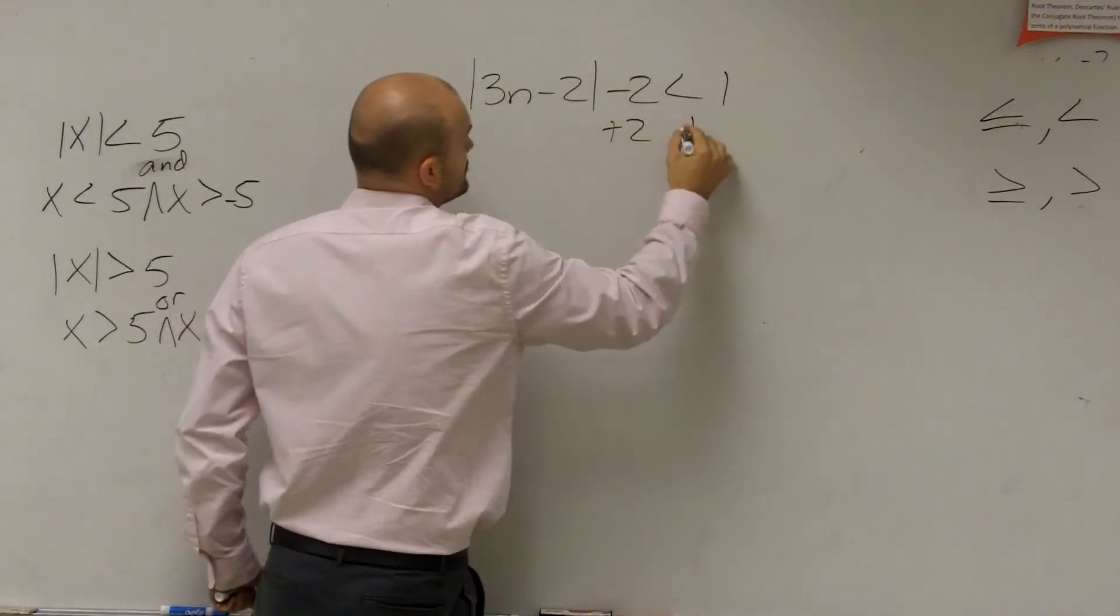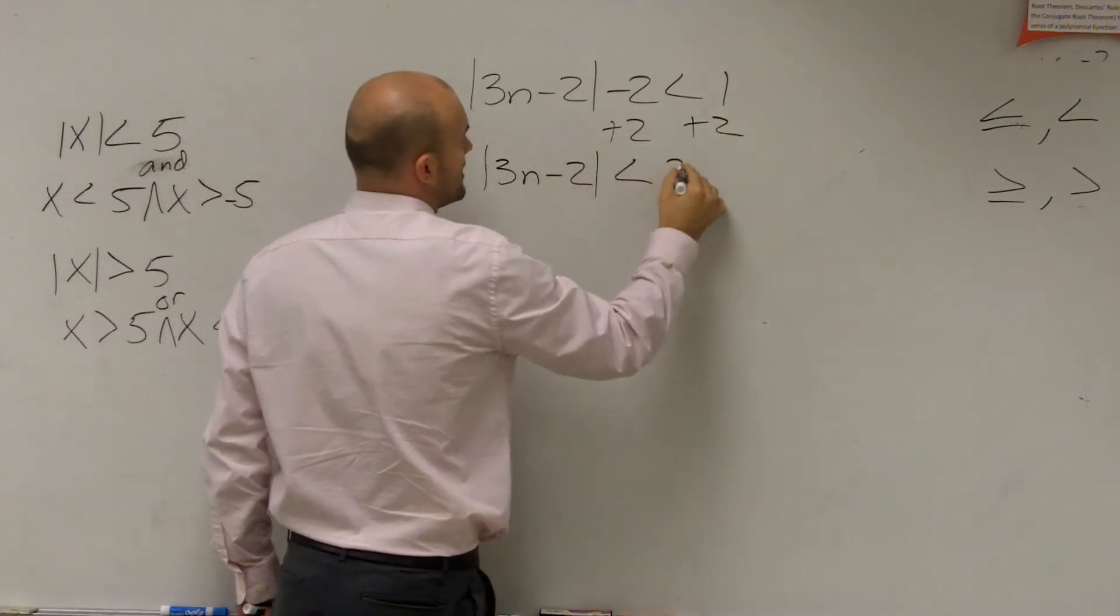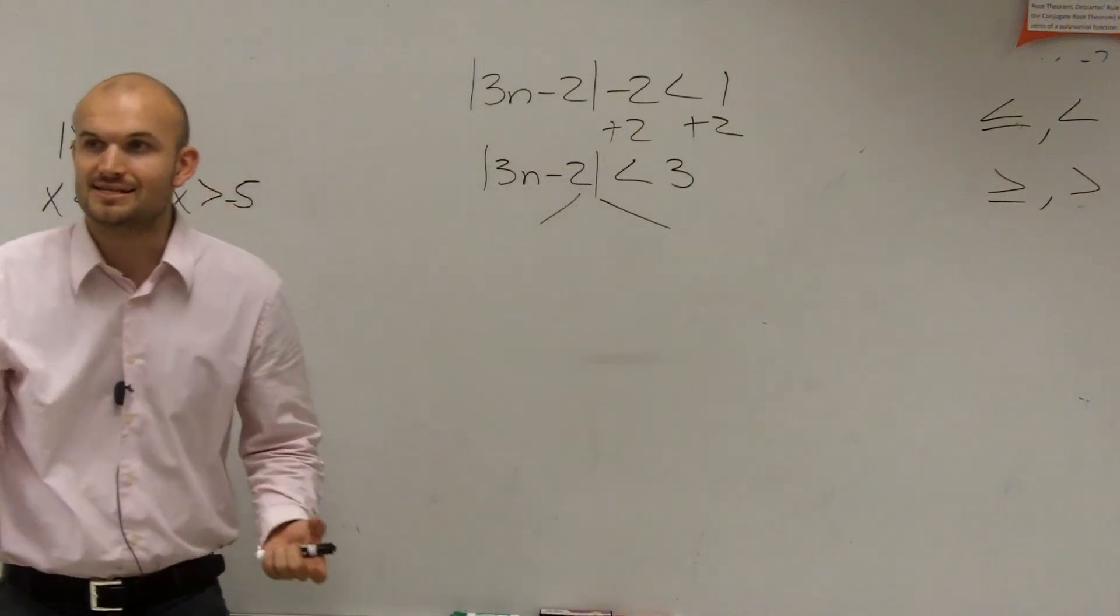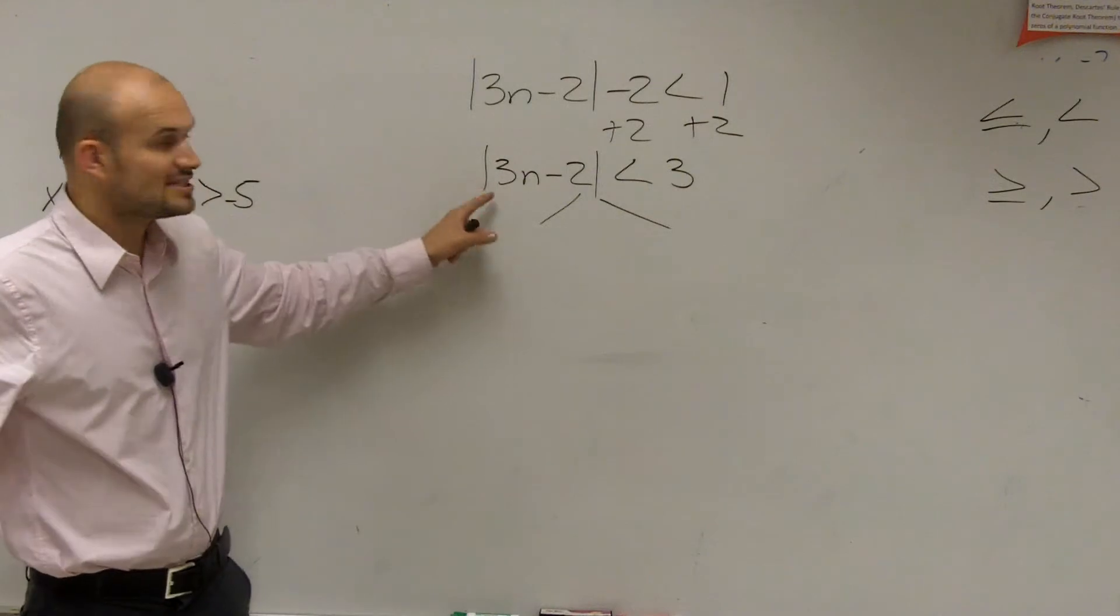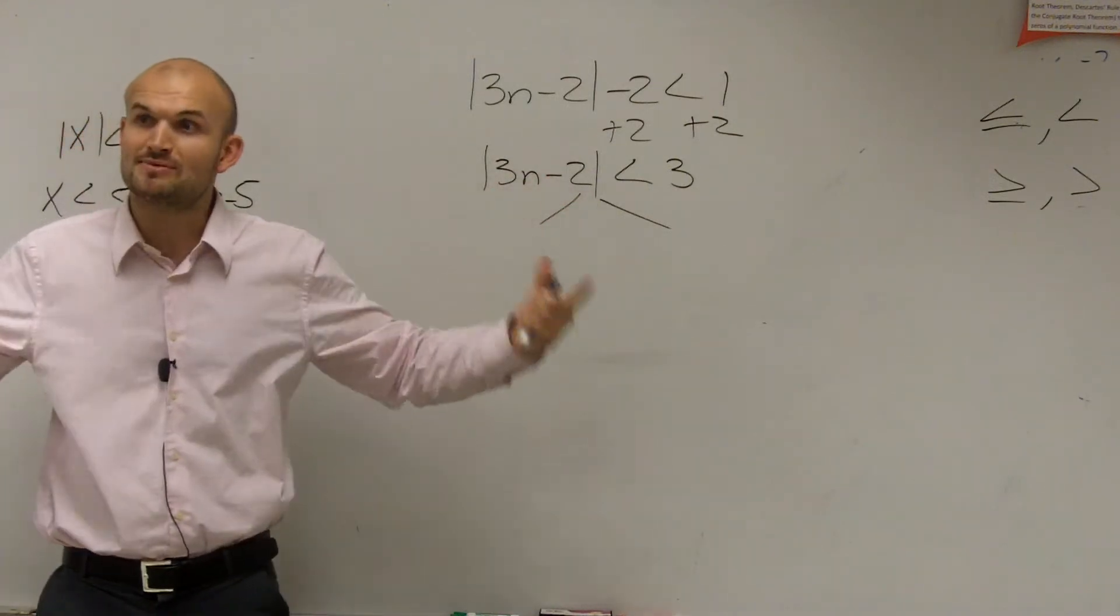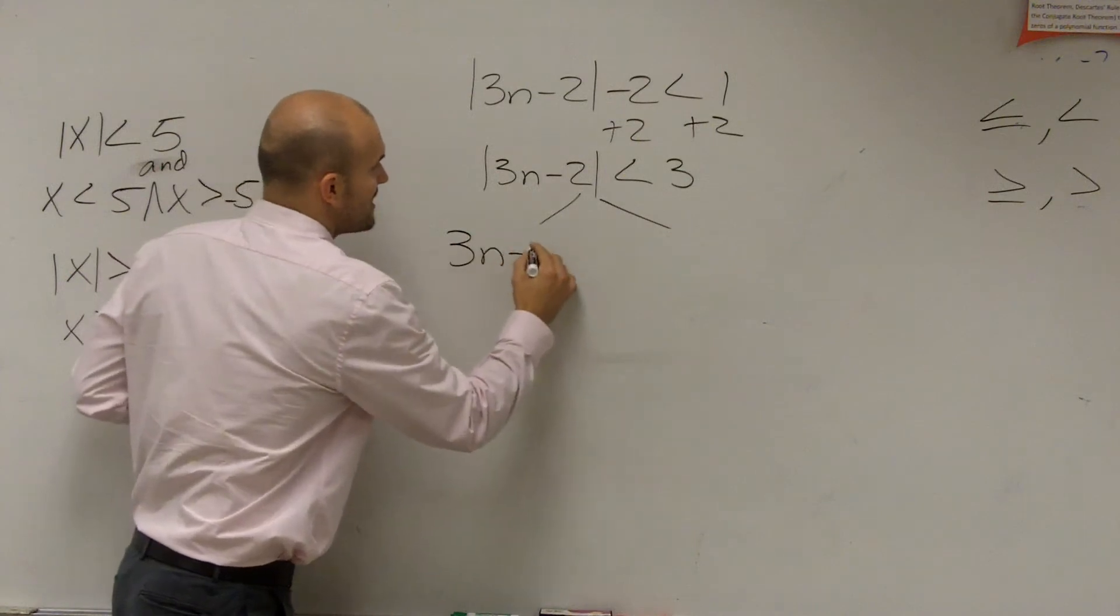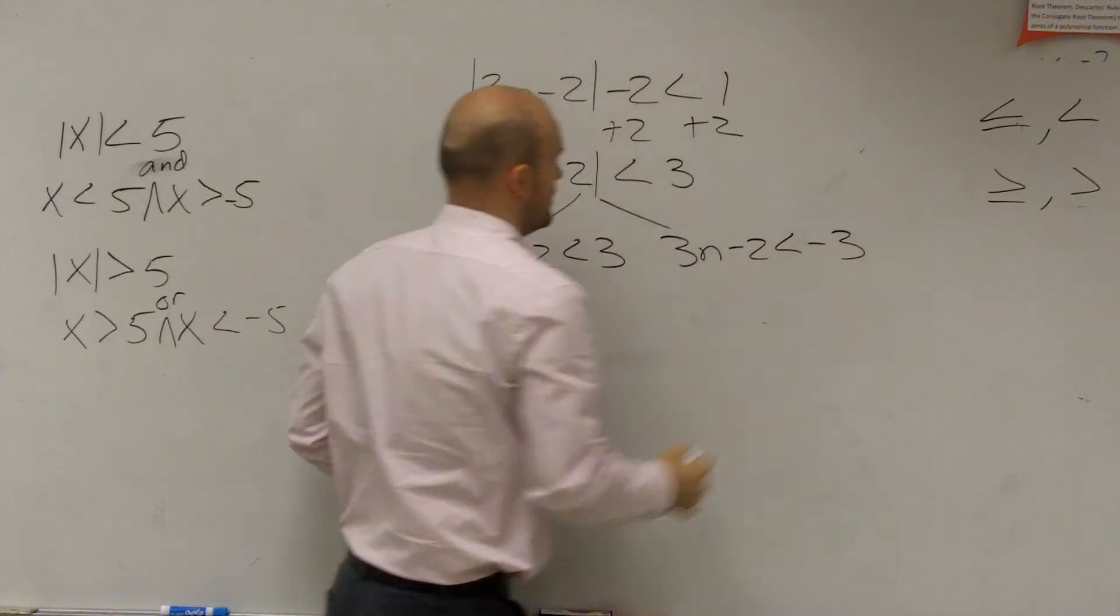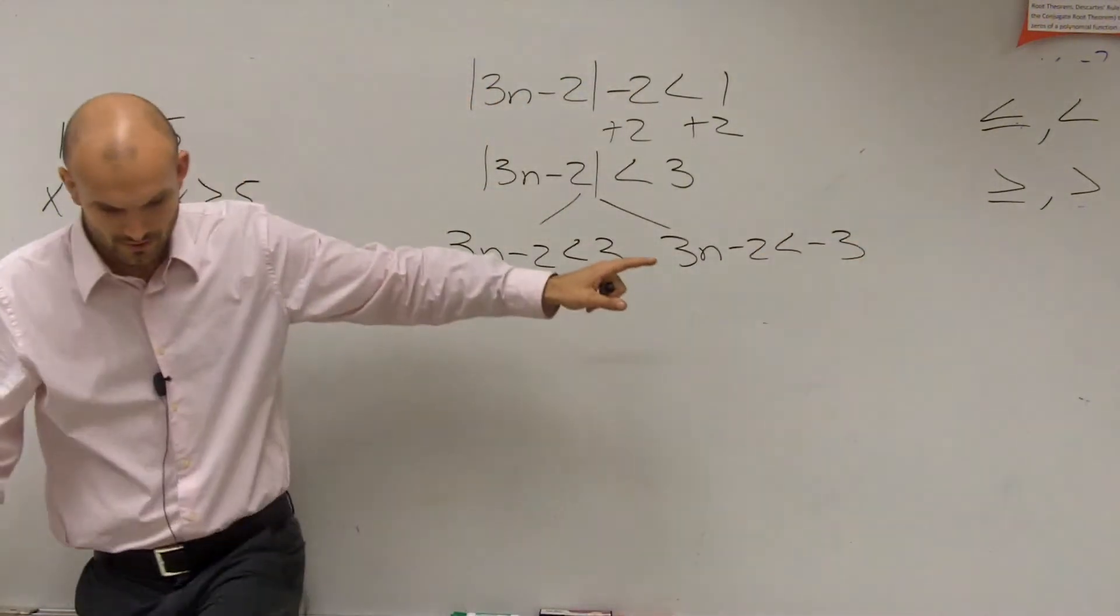So add 2 to both sides. Absolute value of 3n minus 2 is greater than 3. Now create your two cases. When you create the two cases, you get rid of the absolute value signs. This confuses you, right? How do you solve with absolute value signs? Create two cases so you don't have them anymore. Make sure when you negate, you flip the sign.